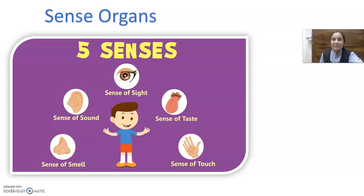How many sense organs do we have? Kitne sense organs hote hain humare? Yes, we have five sense organs. Humare sense organs jo hain wo five hain — eyes, ears, nose, tongue, skin. Eyes help us to see all the things around us. Ears help us to hear the sounds — jo bhi aawazein hoti hain, unko sunne mein kaan madad karte hain. Nose help us to smell the things — cheezon ko soonghne mein nose humari help karta hai.